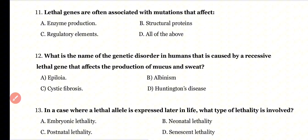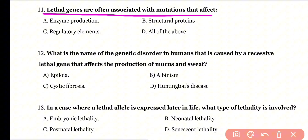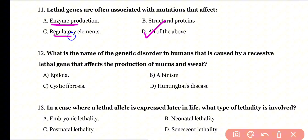Question 11: Lethal genes are often associated with mutations that affect: enzyme production, structural proteins, regulatory elements, or all of the above? Correct answer is option D. Lethal genes are often associated with mutations that affect enzyme production, structural proteins, as well as regulatory proteins.